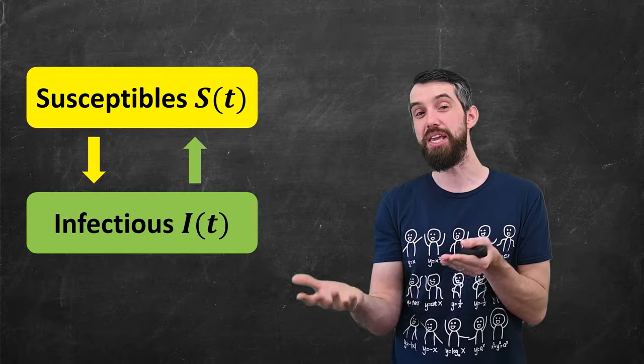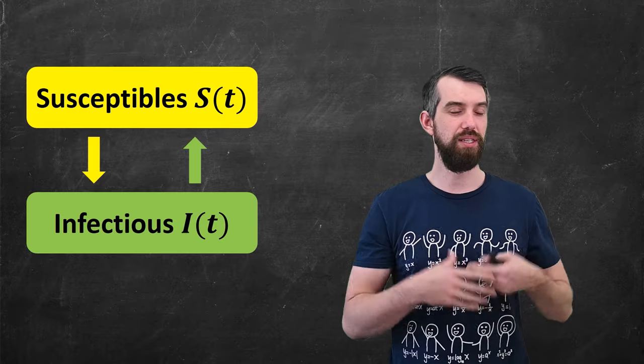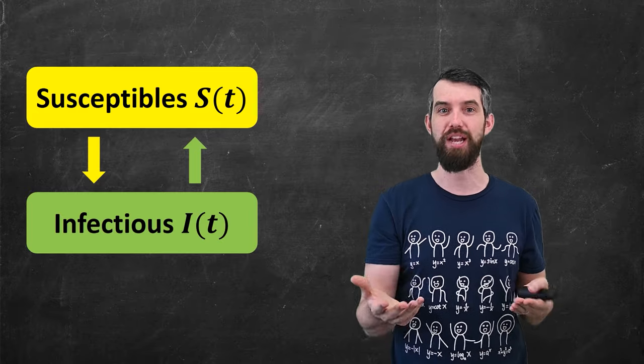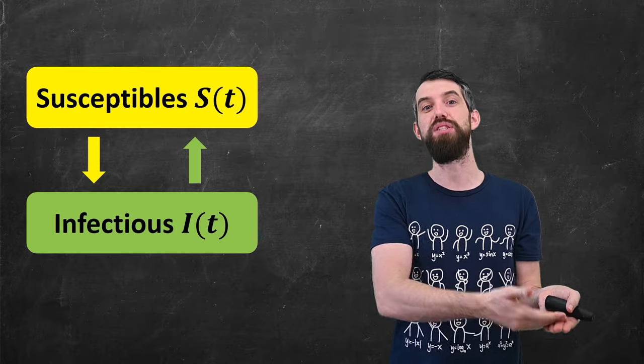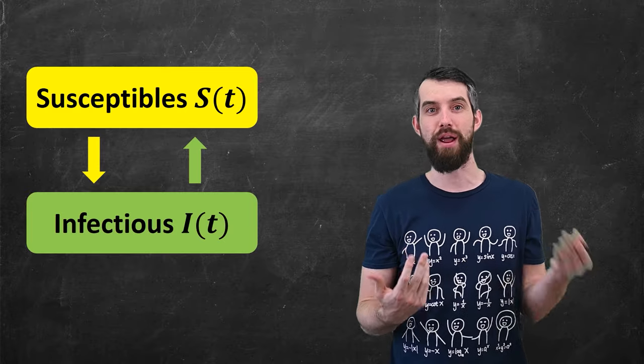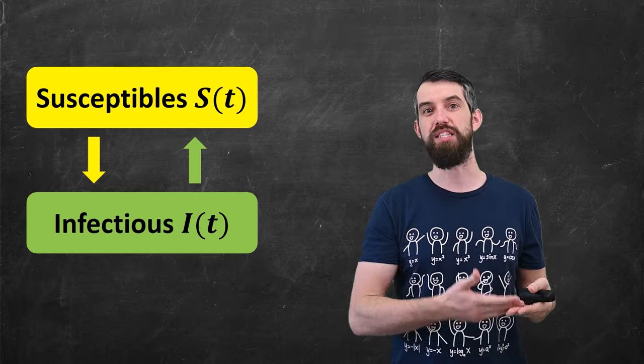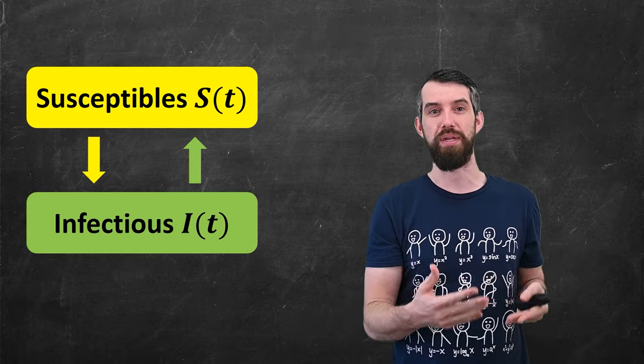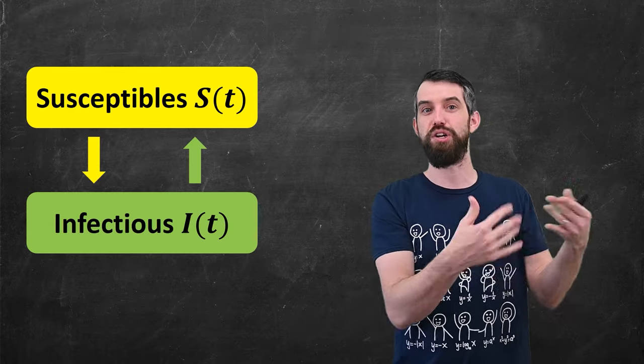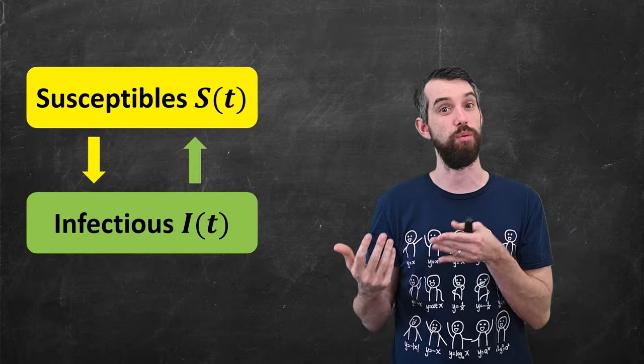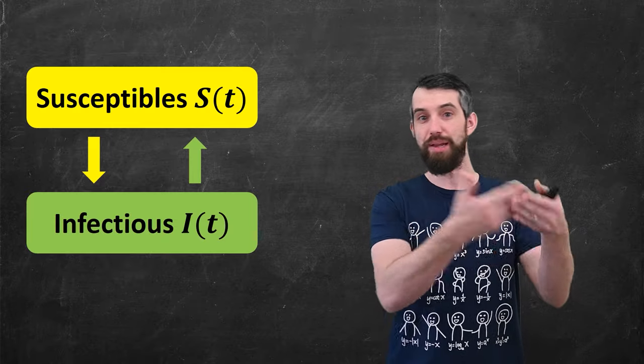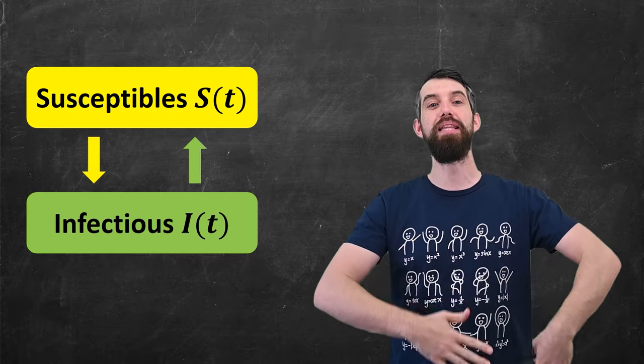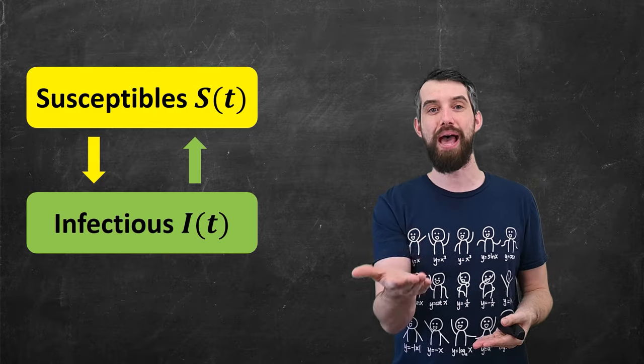One other thing that can happen, and it depends again on the disease, is there might not be a recovered population. This is the case, for example, with the common cold. You can get it over and over and over again, and you getting the cold once does not mean you're recovered from the cold forever. This could be because the disease is mutating fast enough that you get new versions of it, or it could be that, for whatever reason, the antibodies you get from fighting it off once don't persist long-term in your immune system. Nevertheless, susceptible people transmit to infectious people, and then infectious people leave that category and become susceptible again.